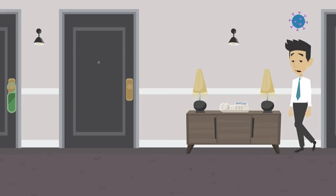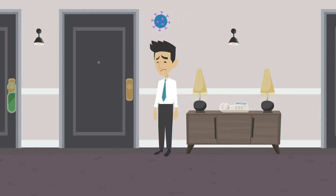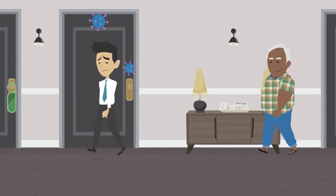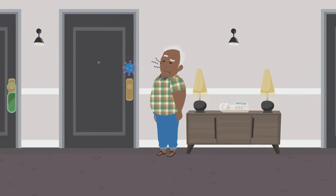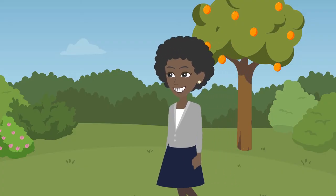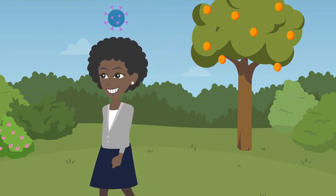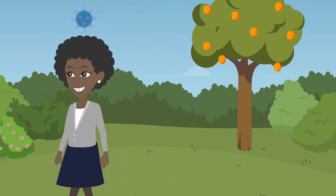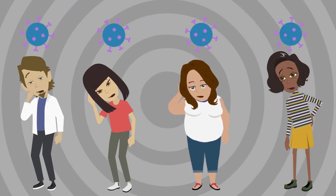If a coronavirus-infected person touches their face and then touches common surfaces like doorknobs, they may leave viruses which another person may touch and move to their eyes, nose and mouth. The younger, stronger and healthier a person is, the more quickly they tend to clear the virus from their body.